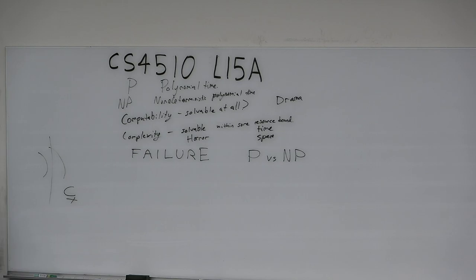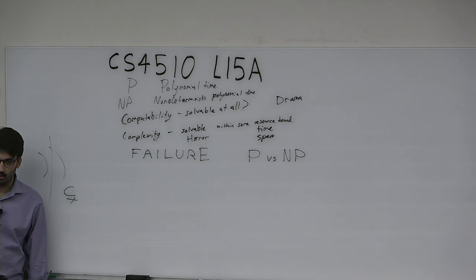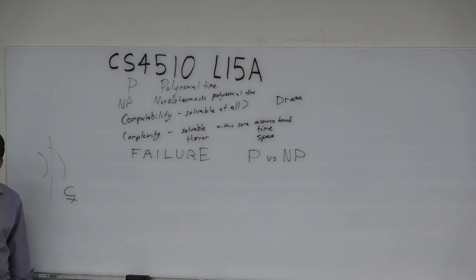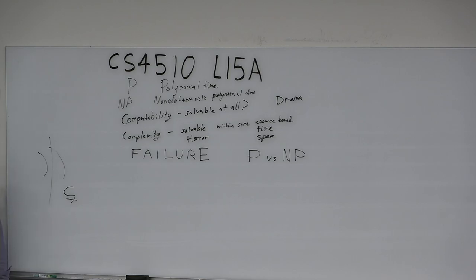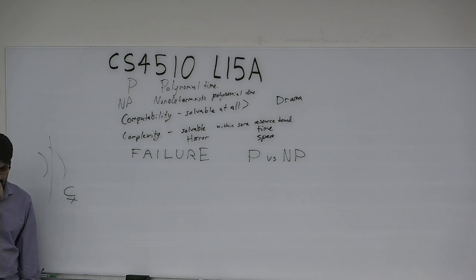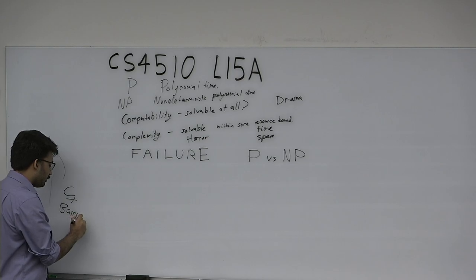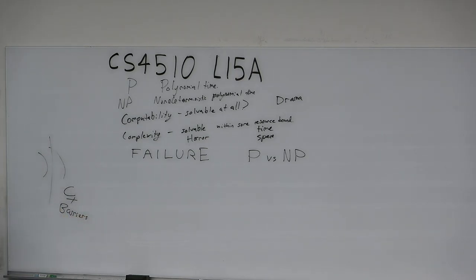All the proofs we did are what we call relativizing proofs. Then there was a paper showing there is no relativizing proof of P vs NP, so we had to find non-relativizing techniques using circuit complexity. But then Razborov and Rudich showed that P versus NP has no proof of that structure either — it's called the natural proofs barrier. So we now know a proof of P versus NP can't be relativizing and can't be natural. There are these barriers to the problem that I don't think any other field's open problems have.